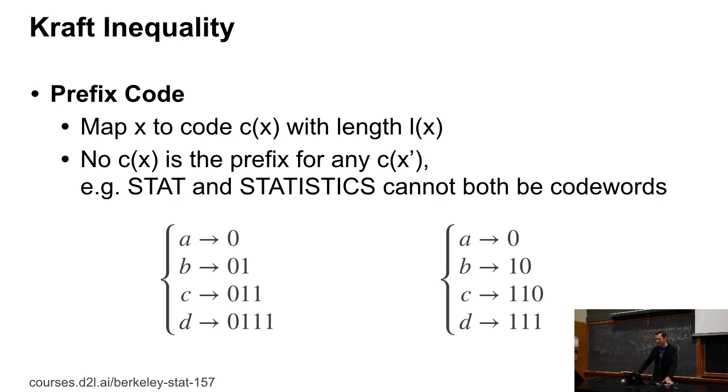So now, let's look at something called a Kraft inequality. Codes are so-called prefix codes if I can map every symbol into a code, let's say zeros and ones with some length L of x, and where no sequence is a prefix of another code word. For instance, I couldn't have as one code word dog and as another code word doghouse. That wouldn't work because dog would be a prefix to doghouse. And prefix codes are very nice because they're very nice to decode.